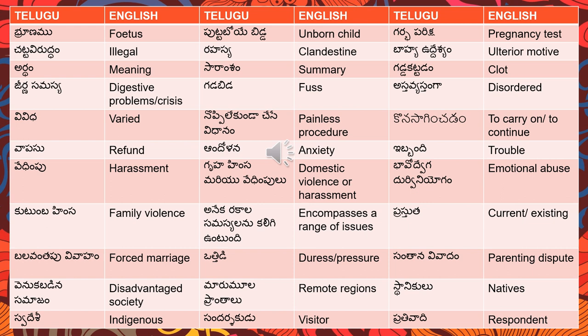'Ulterior motive' — something which is not apparent, or something you think is the real reason behind someone doing a particular thing. That is translated as 'bayata ki kanapadani uddeshyam.' 'Artha' means meaning. 'Saransh' means summary or gist. For example, if a patient says to the doctor, 'Saransh enti?' — what is the summary of this diagnosis or report — we use the word saransh.